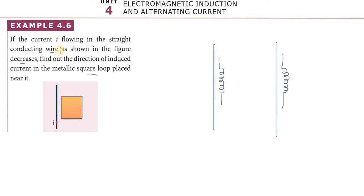If the current i flowing in the straight conducting wire shown in the figure decreases, find out the direction of induced current in the metallic square loop placed near it.